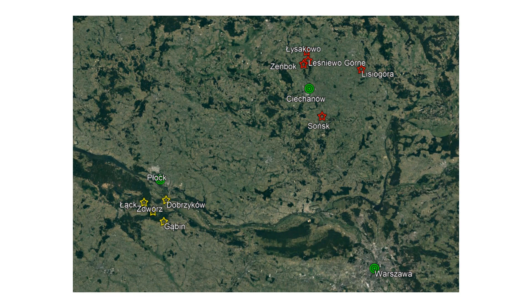On the other hand, it takes three days to walk from Ciechanów to Płock, so it seems that the Polivoda and Stemski families did not know each other before Stanisław and Stanisława were married in Milwaukee.